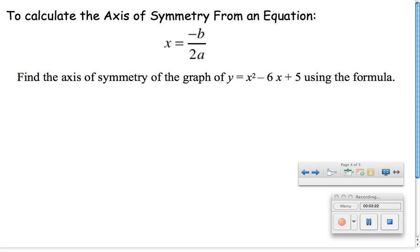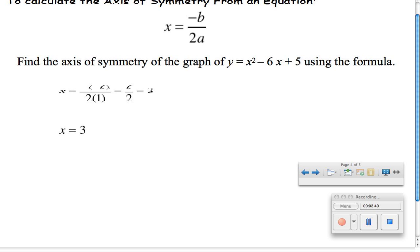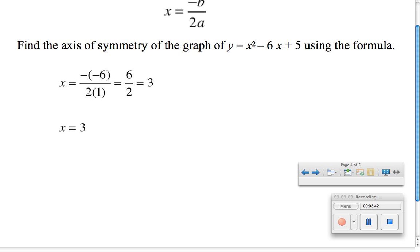So if I wanted to find the axis of symmetry of the line of the parabola, y equals x squared minus 6x plus 5, I have to remember that b is the coefficient of x, which is negative 6, and a is the coefficient of x squared, which is 1. So to do this calculation, I first substitute in my value of b and my value of a, and I end up with 6 over 2 to get 3. That means my axis of symmetry is x equals 3.